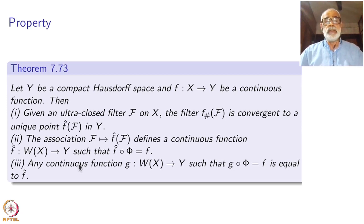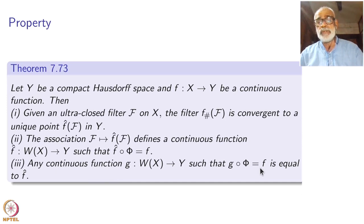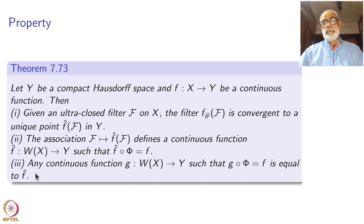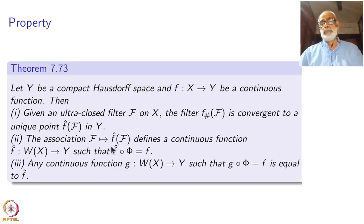The third condition gives uniqueness of f-hat itself: any continuous function g from Wx to y such that g composed with phi equals f must be equal to f-hat. This is the universal property of the compactification. Let us go to the proof.